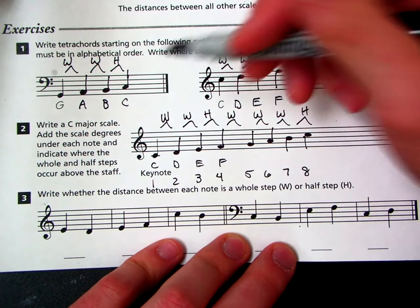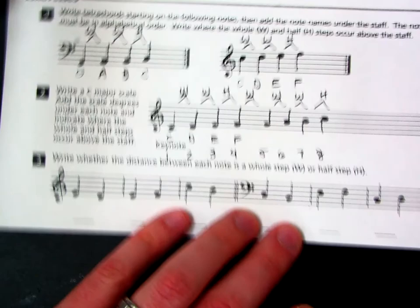So that should tell you the pattern to build a whole scale, or a complete major scale. Whole, whole, half. Whole, whole, whole, half.